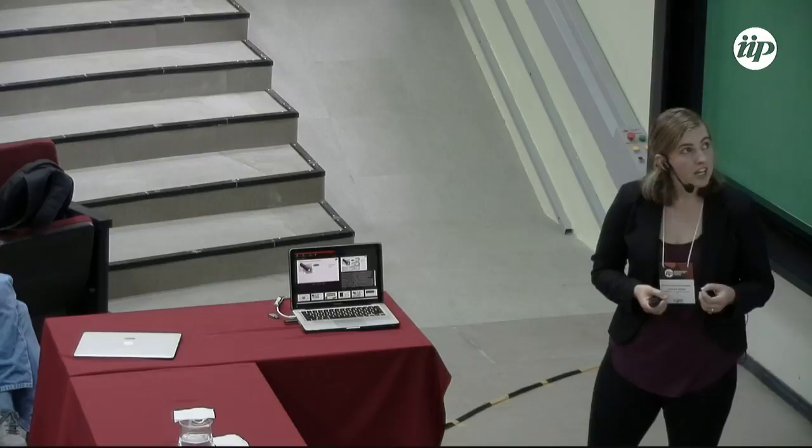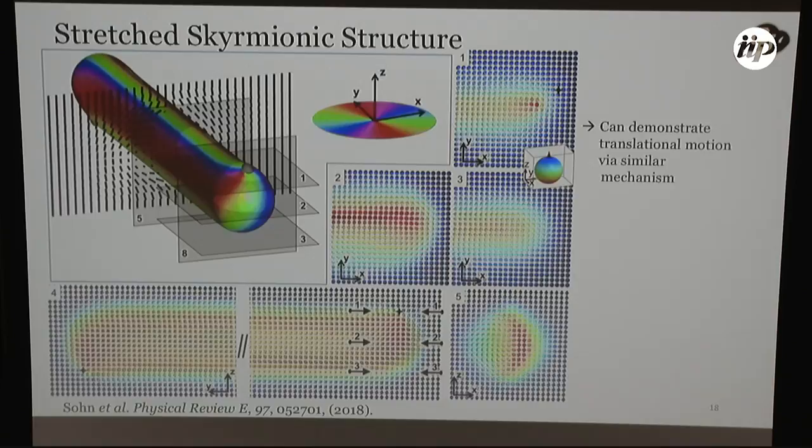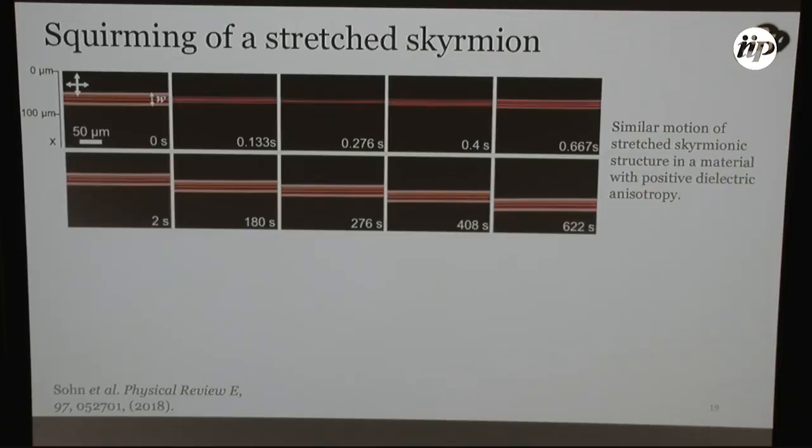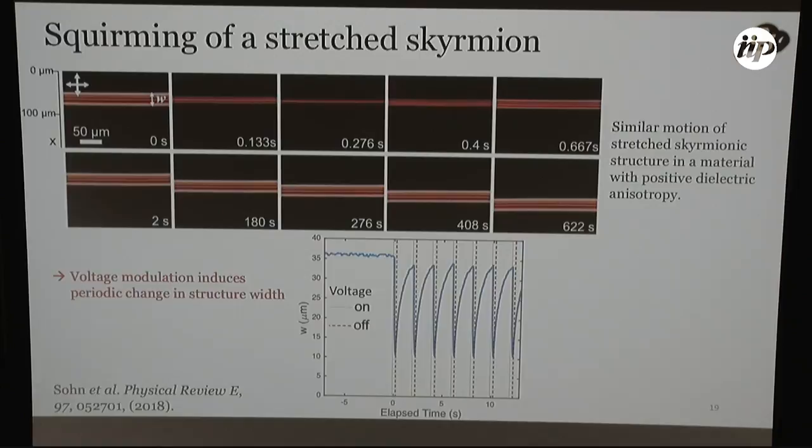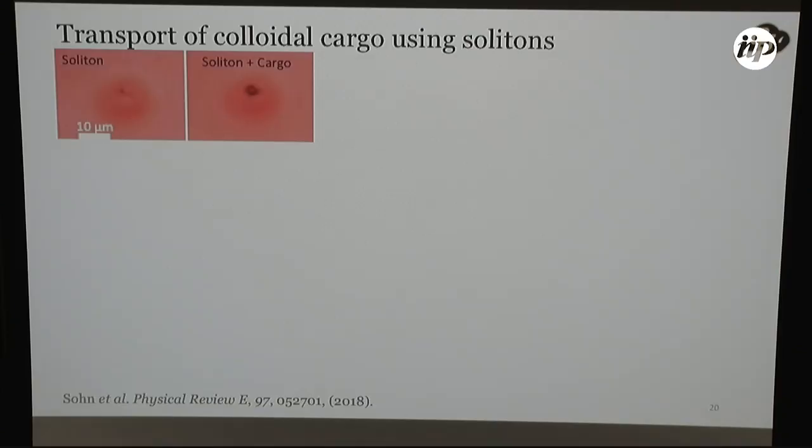And so since our solitons are topologically protected, we can change and morph them to get different interesting configurations. And one of those that I'll show here is when we take the point defects of our topological soliton and pull them apart with laser tweezers, we can get this interesting stretched structure. And we can slice it in all different ways and understand the various director configurations numerically. But what I want to point out here is that in this cross-section, cutting down through our soliton, we have a skyrmion that we're familiar with. And so we can modulate field even in a material with positive dielectric anisotropy and induce this asymmetric morphing of the structure that results in some displacement of the structure over time.